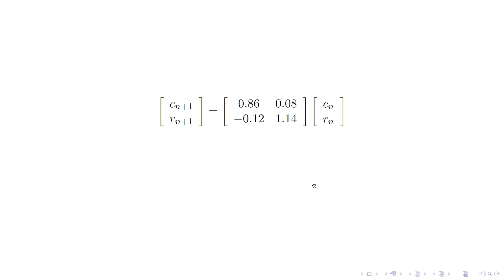We can break that down into more of a linear algebra looking expression by saying that the vector cn+1, rn+1 is equal to this matrix times the previous year's populations. And again, we're getting the idea that this year's populations tells me what next year's populations are going to be. And we call this a discrete dynamical system.